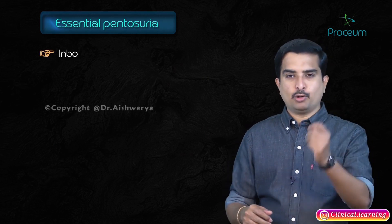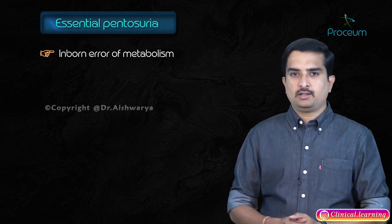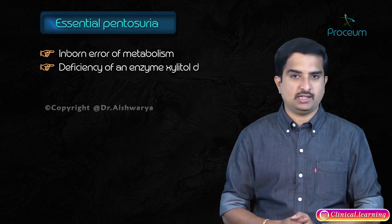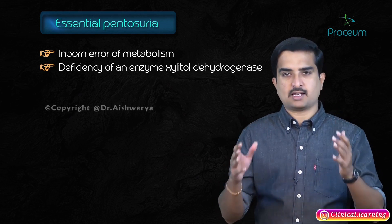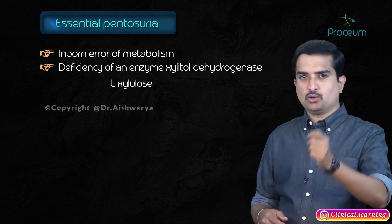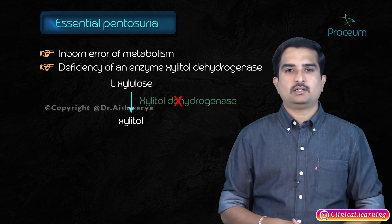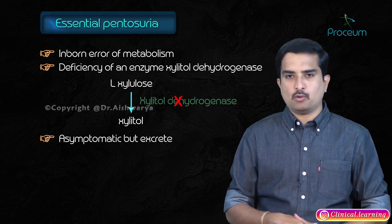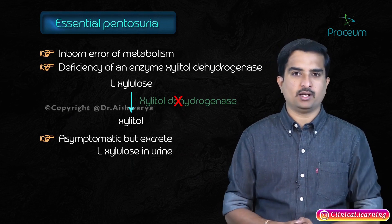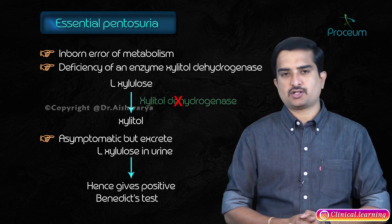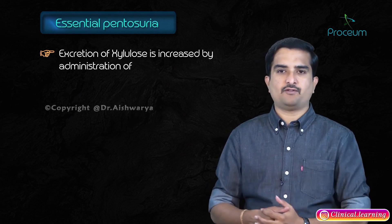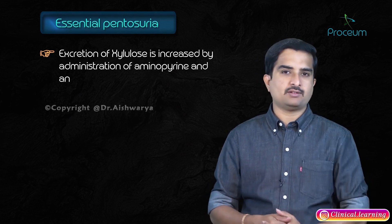Essential pentosuria is an inborn error of metabolism. The defect is mainly due to a deficiency of the enzyme xylitol dehydrogenase. Because of this enzyme defect, L-xylulose cannot be converted into xylitol. Affected individuals are usually asymptomatic but excrete large amounts of L-xylulose in the urine, hence giving a positive Benedict's test. This excretion can be increased by administration of drugs like aminopyrene and antipyrene.